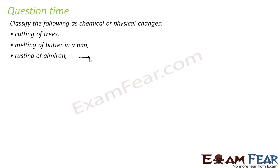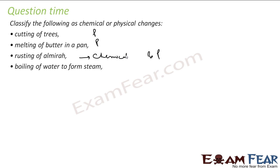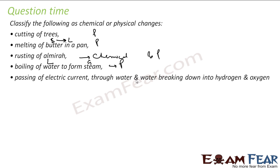Rusting of an almirah involves both physical and chemical change — the physical appearance changes as it becomes a brownish color. Boiling of water to form steam: water is liquid and steam is gas, so there is a change in physical property, but no change in chemical property — it's just a physical change. Passing electric current into water and breaking it into hydrogen and oxygen is a chemical change because water is a different chemical that becomes different chemicals. Also, water is liquid and both products are gas, so there's a physical change as well.